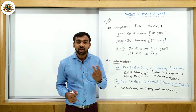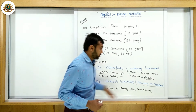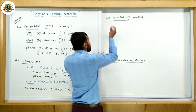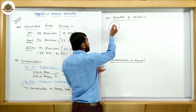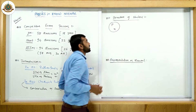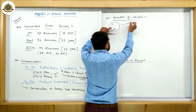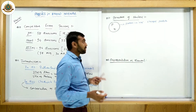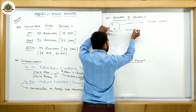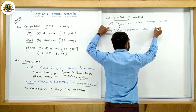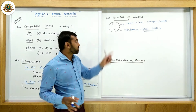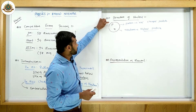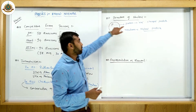Now let's look at the substructure of the nucleus. The nucleus contains two particles: protons and neutrons. The proton is a positively charged particle, and the neutron is a neutral particle — meaning it has no charge. So the nucleus contains one positively charged particle (proton) and one neutral particle (neutron).